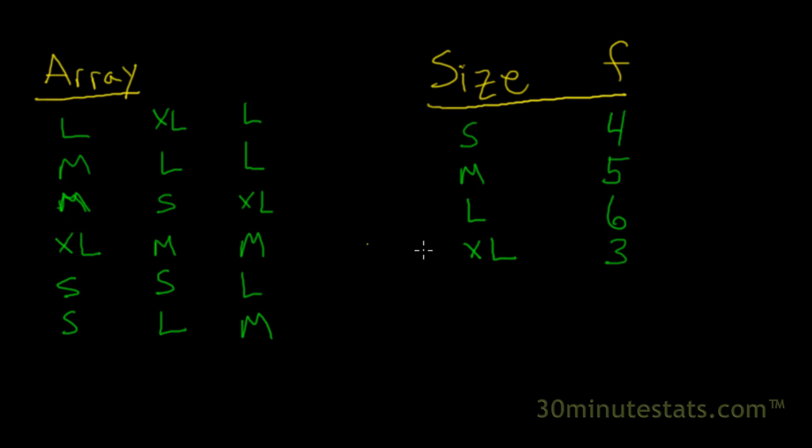Okay, so now we've got a count of how many different size shirts we sold in this past week. And we've created a frequency distribution. And now just to verify, we know that there are 18 observations over here. So we can add up our frequencies and we see four plus five is nine, plus six is 15, plus three is 18. And so we've got a sample size here and a frequency distribution of 18.